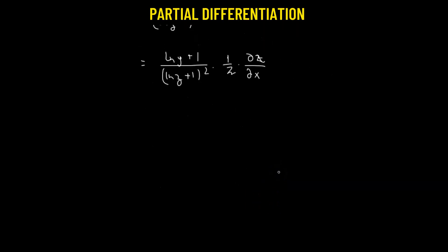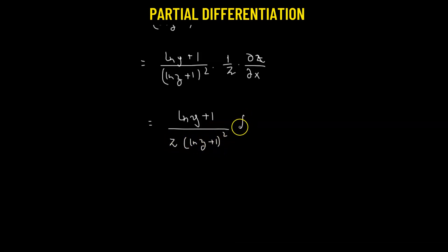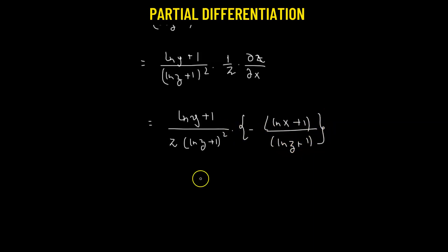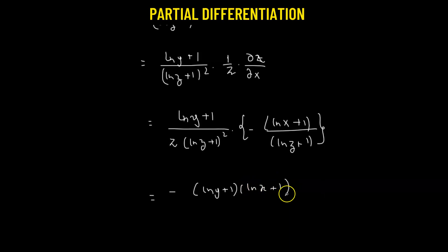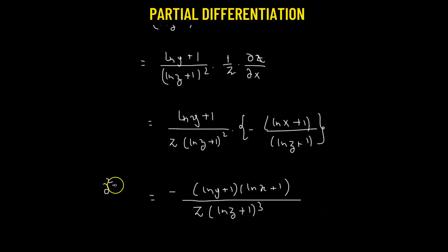Substituting ∂z/∂x = -(log x + 1)/(log z + 1) from equation two, we get: (log y + 1)/(z · (log z + 1)²) · [-(log x + 1)/(log z + 1)]. Combining, the second partial derivative of z with respect to y then x equals negative (log y + 1)(log x + 1) divided by z · (log z + 1)³.